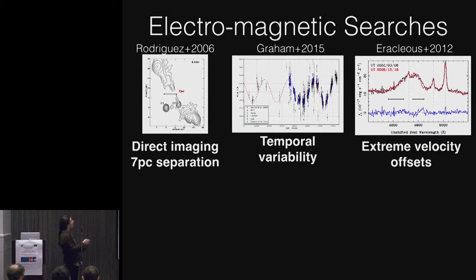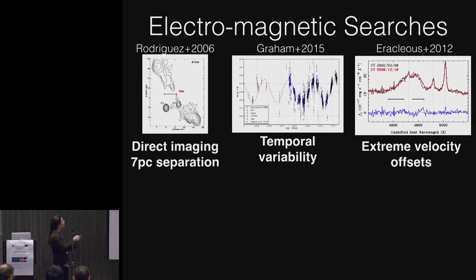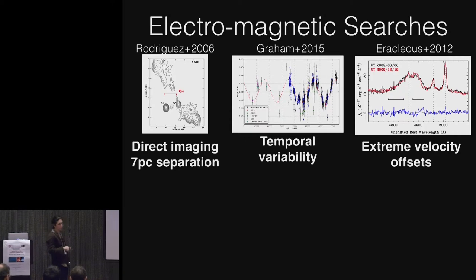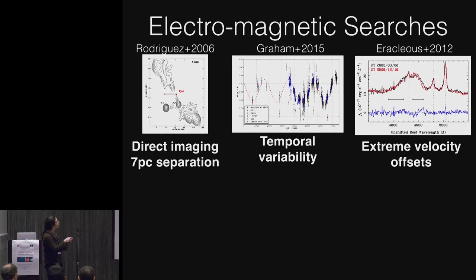Directly imaging these things, taking a picture of each of them, is prohibitive aside from the very, very closest. And this is the best case for a pair of black holes at a 7 parsec separation, nowhere near close enough to make gravitational waves.